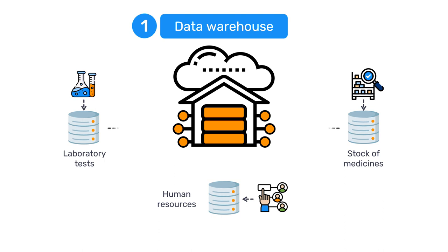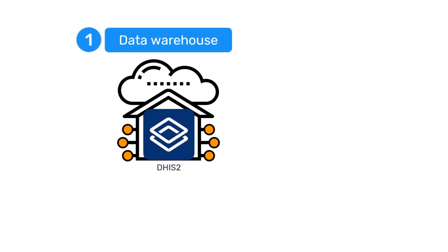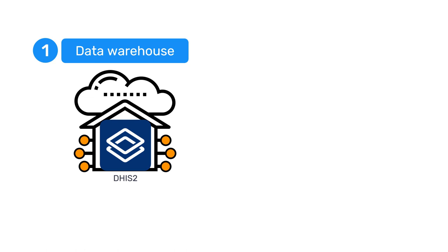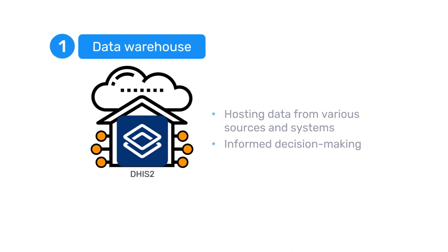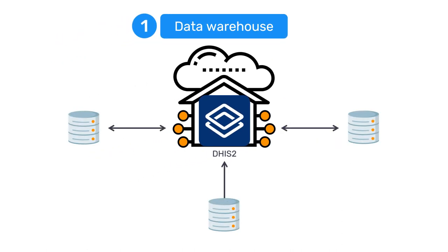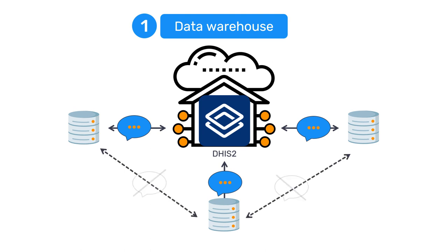Data from these separate systems flow into DHIS-2. In this scenario, the DHIS-2 platform functions as an integrated data warehouse, hosting data from various sources and systems so that they can be utilized holistically to enable informed decision-making. While this scenario involves more than two systems, it is still an example of one-to-one integration because each system is integrated with DHIS-2 directly without those external systems being able to talk to each other.